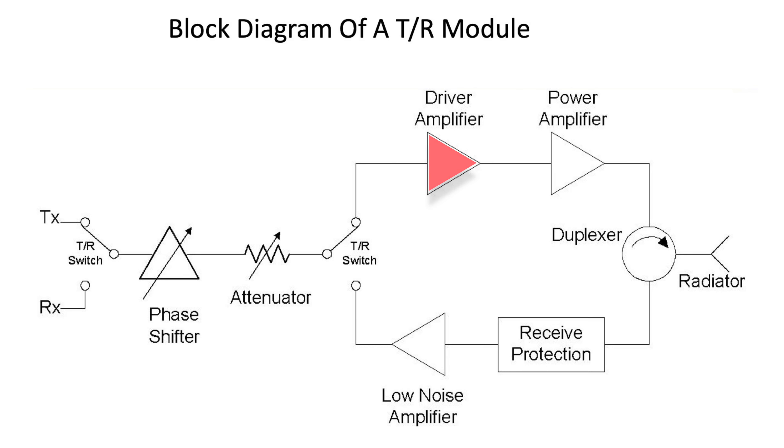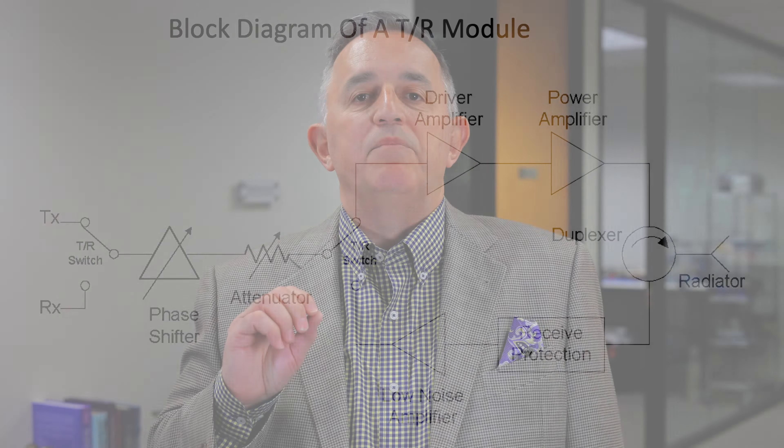Also in the transmit path, there is a thing often called a driver amplifier. It takes the low-level signal entering the phased array and amplifies it to the level required by the high power amplifier. In the receive section, there's normally a function called a low noise amplifier, and it's responsible for amplifying the receive signals. In front of that LNA, between the LNA and the antenna, is often a component called a limiter or a switch that protects the LNA from being permanently damaged by energy that leaks in from external sources or from the high power amplifier itself.